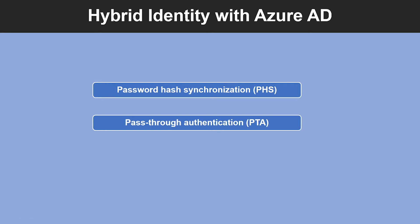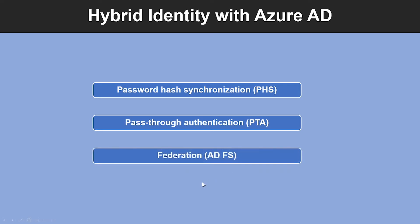The second feature is Pass-Through Authentication. Azure AD Pass-Through Authentication allows your users to sign into both on-premises and cloud-based applications using the same passwords. This feature provides your users a better experience — one less password to remember — and reduces IT help desk cost because your users are less likely to forget how to sign in.